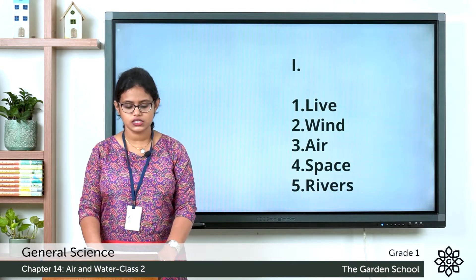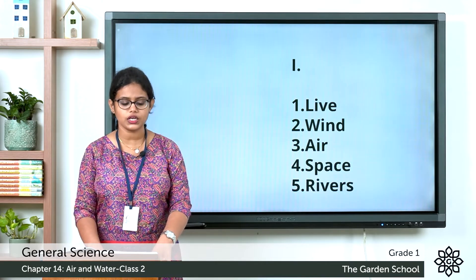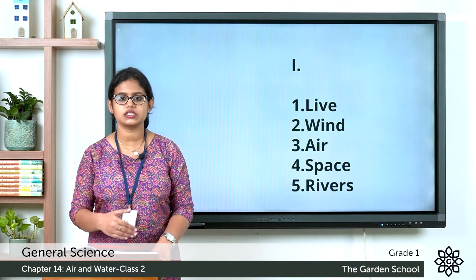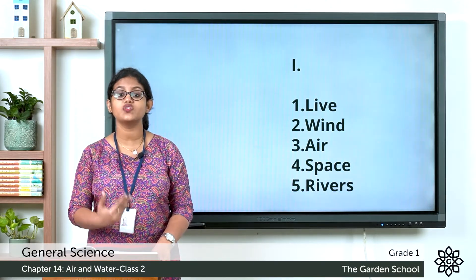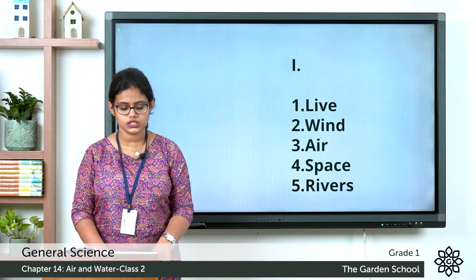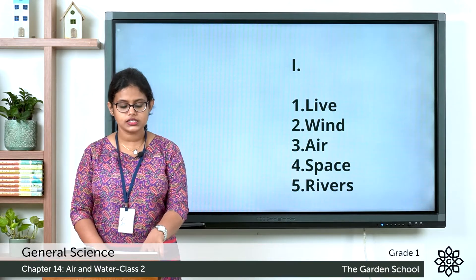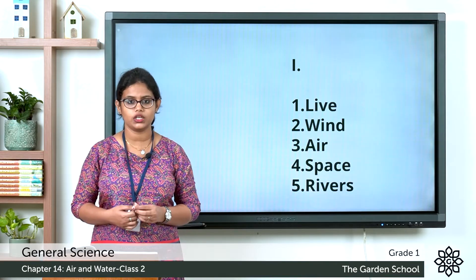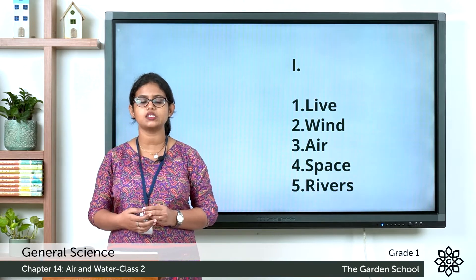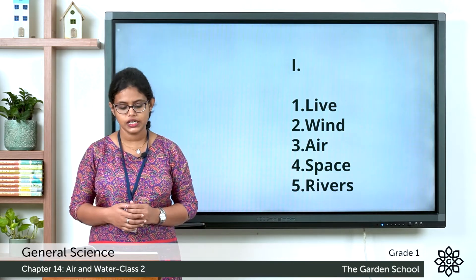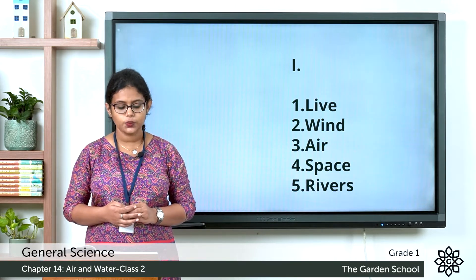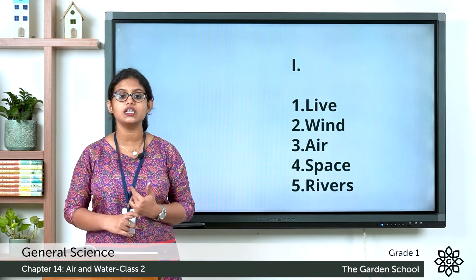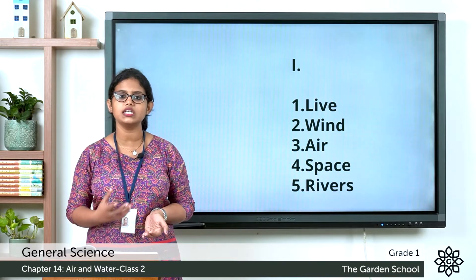Let's see the answers. The answer for the first one: plants and animals need air to live. Second one: fast moving air is called wind. Gently moving air is called breeze. Third one: we cannot see air.